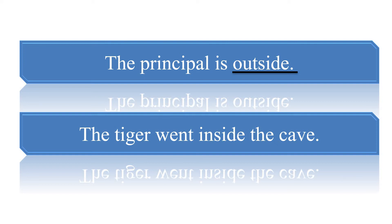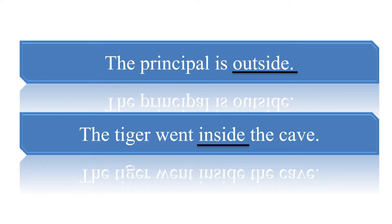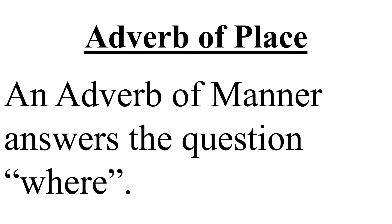The tiger went inside the cave. Is there any word that is showing the place? That is 'inside', so 'inside' will be Adverb of Place. Agar aap dono sentences mein question create karenge, to first ka answer hoga 'outside' and second ka answer hoga 'inside' — jo ki dono Adverb of Place hain. It clears ki agar aap 'where' se question create karenge toh the answer you will get is Adverb of Place. An Adverb of Place answers the question 'where'.